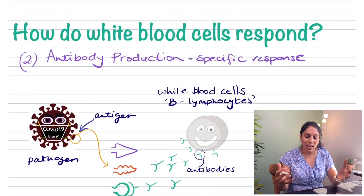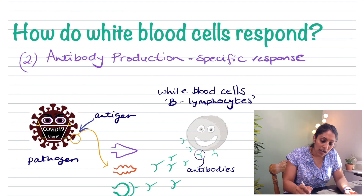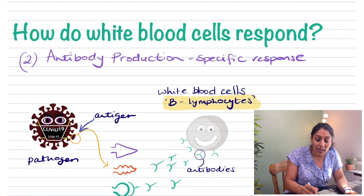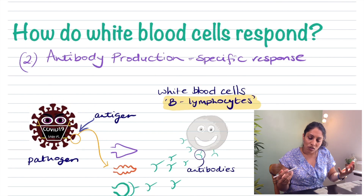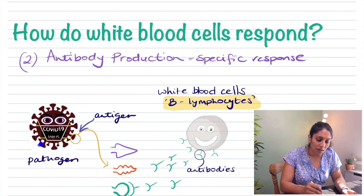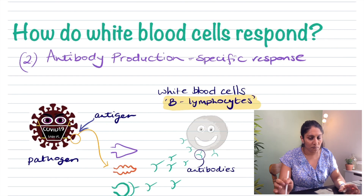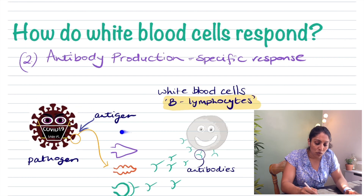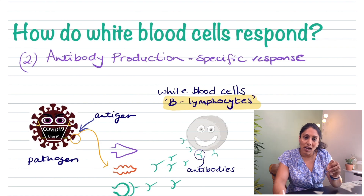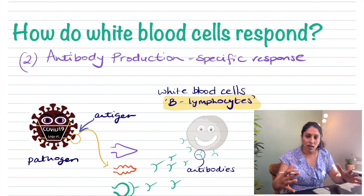The second way white blood cells protect you is through antibody production. This type of white blood cell is called a B lymphocyte. What makes the B lymphocyte special is that it produces antibodies — proteins that search for pathogens in the body. Pathogens have specifically shaped proteins surrounding their cell called antigens, which act almost like the pathogen's identity. The antibody from the B lymphocyte must find the correct shape of antigen on the pathogen to bind to it.